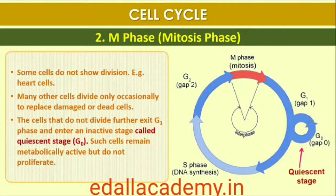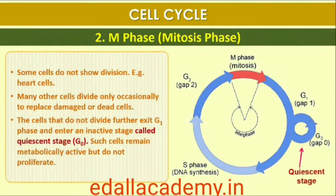Some cells in adult animals do not appear to exhibit division. For example, heart cells, and many other cells divide only occasionally, as needed to replace cells that have been lost because of injury or cell death. These cells that do not divide further exit G1 phase to enter an inactive stage called the quiescent stage, G0, of the cell cycle. Cells in this stage remain metabolically active but no longer proliferate unless called on to do so depending on the requirement of the organism.